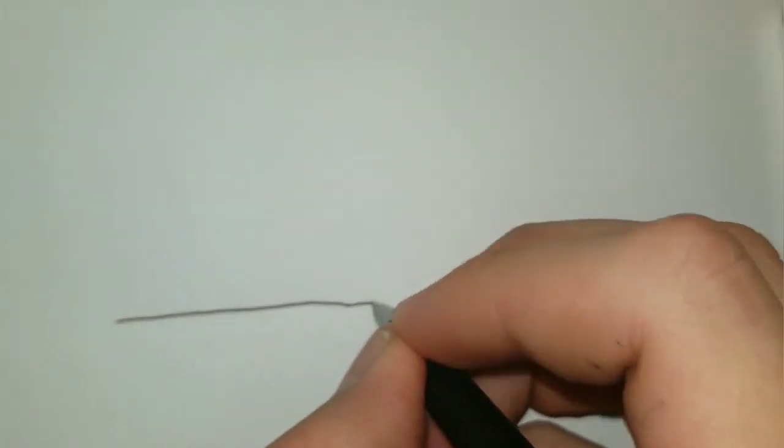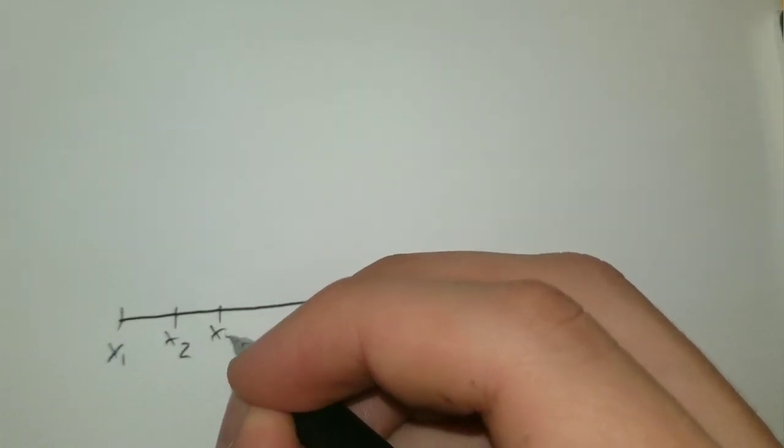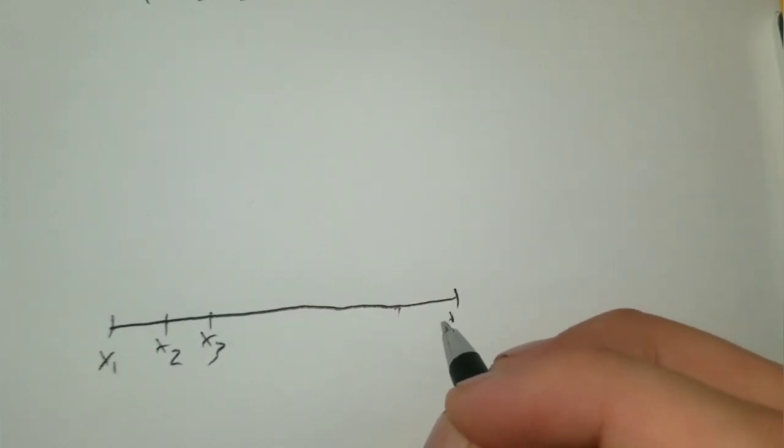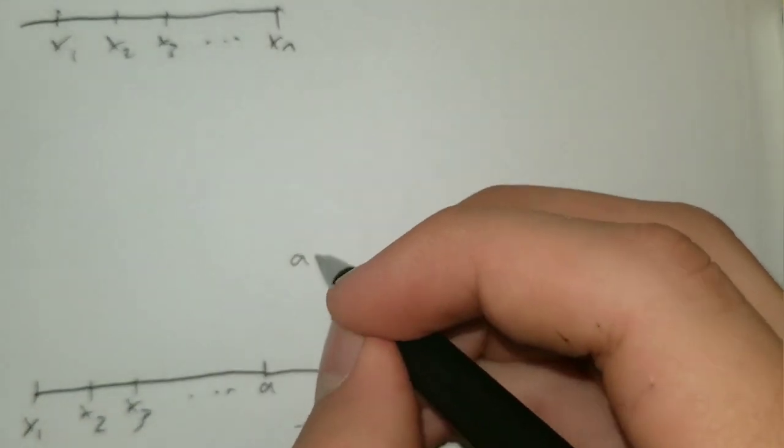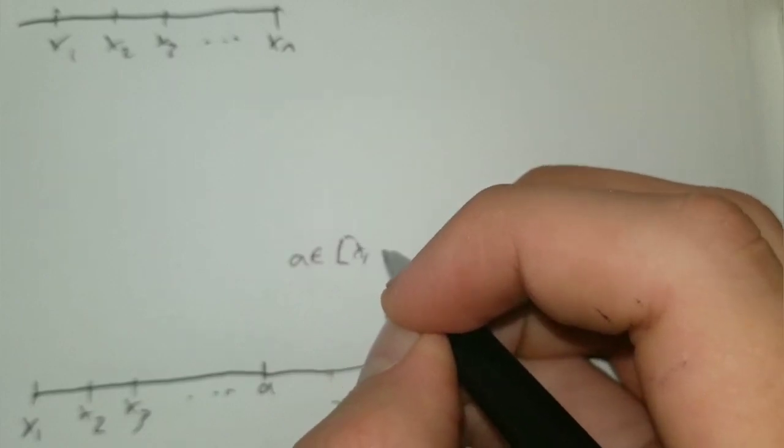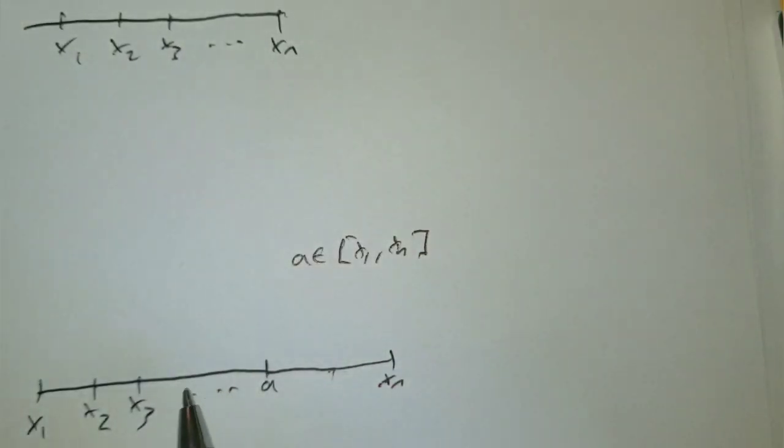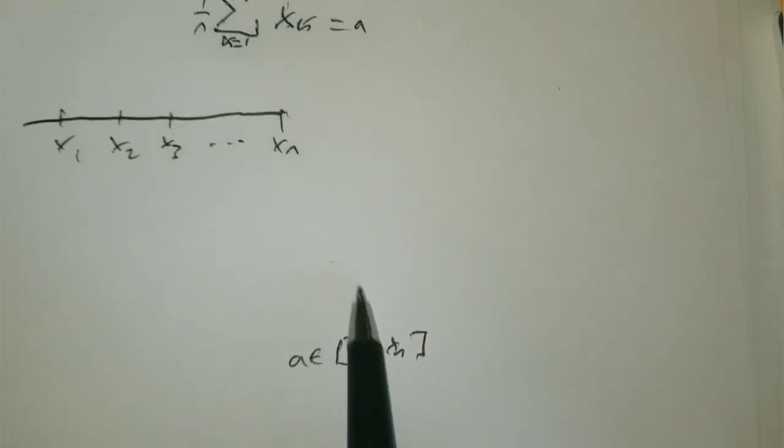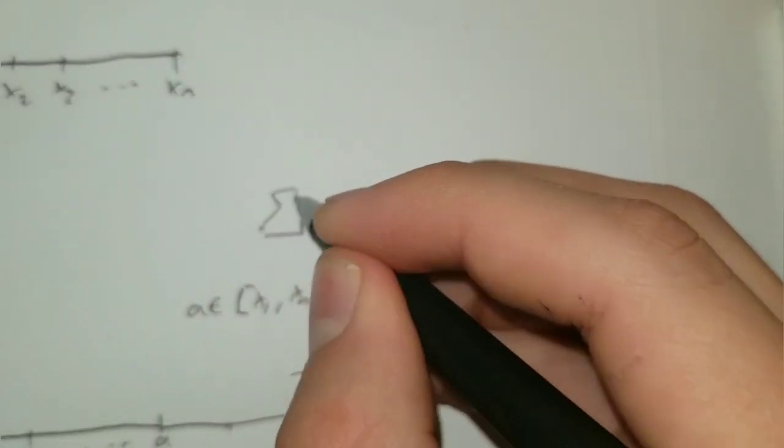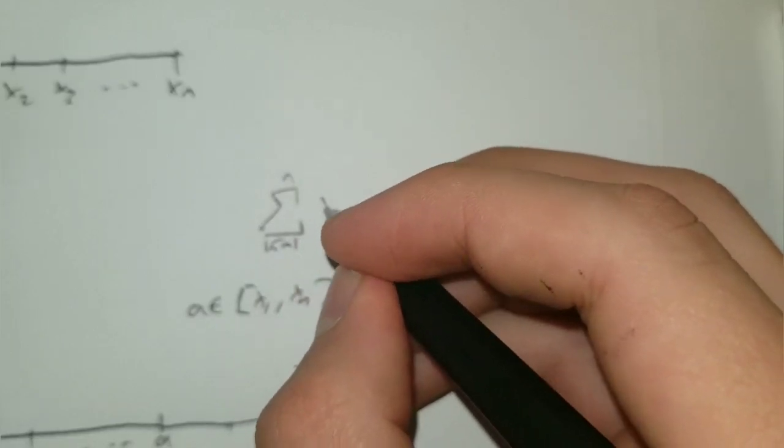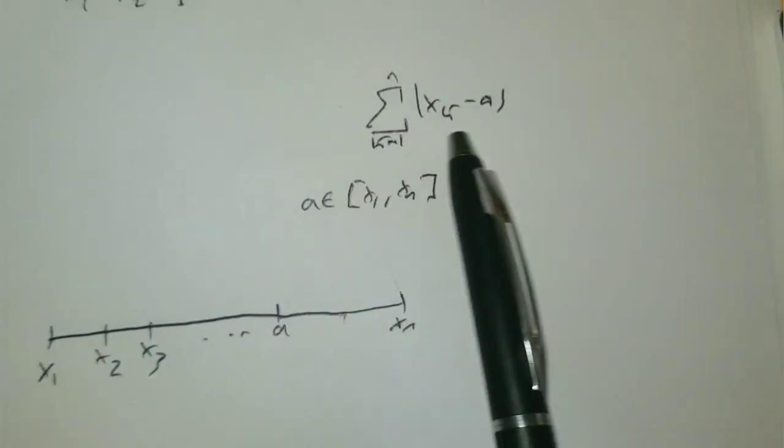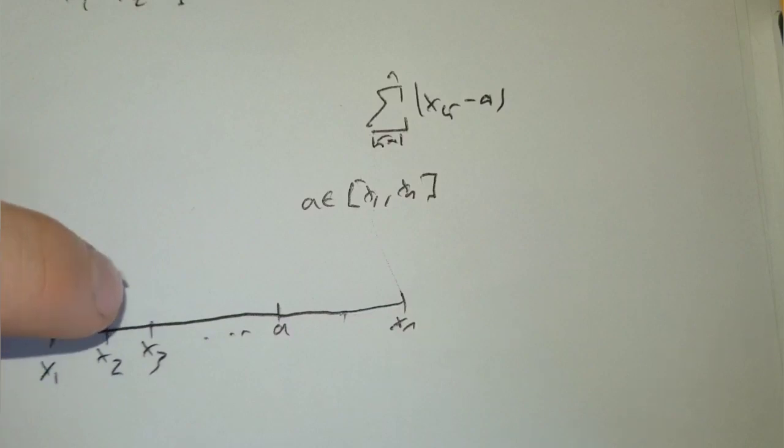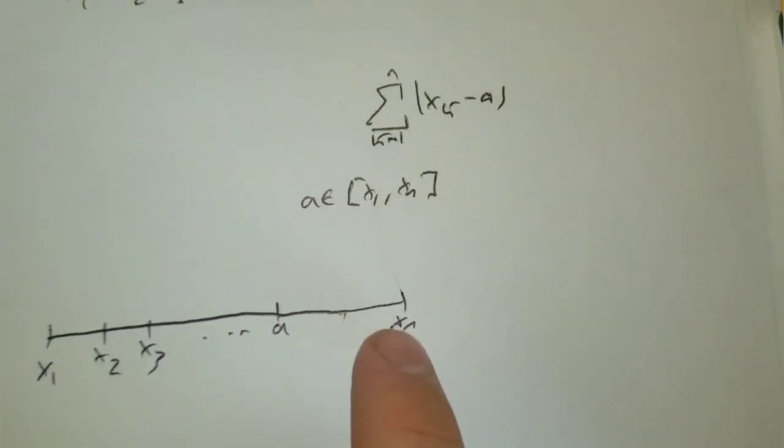So let's think about it this way. So x1, x2, x3, all the way up to xn. Average exists between x1 and xn. It exists as a minimized version of - it minimizes the sum of all these differences between x1, x2, and x3, and xn between a.